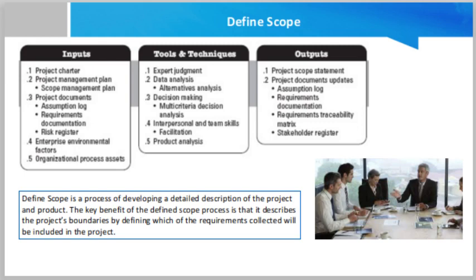Enterprise environmental factors include the organization's culture, infrastructure, personnel administration, and marketplace conditions. Organizational process assets factors that influence the Define Scope process include policies, procedures, and templates for a project scope statement, project files from previous projects, and lessons learned from previous phases and projects.